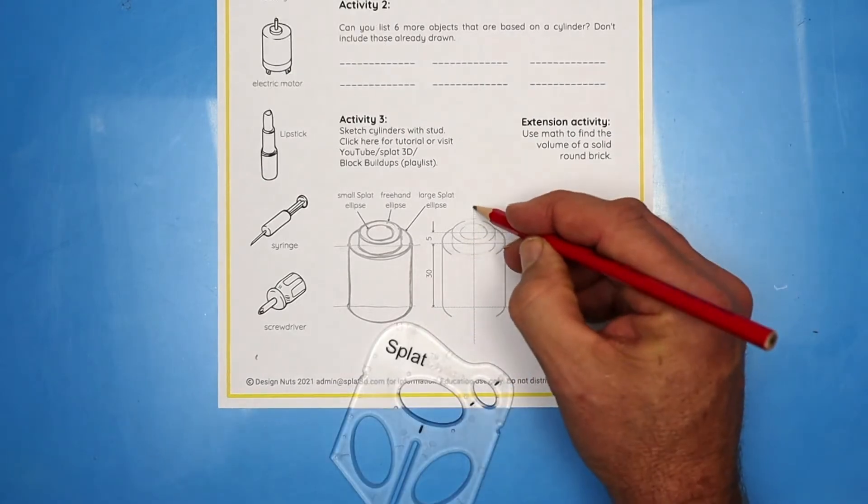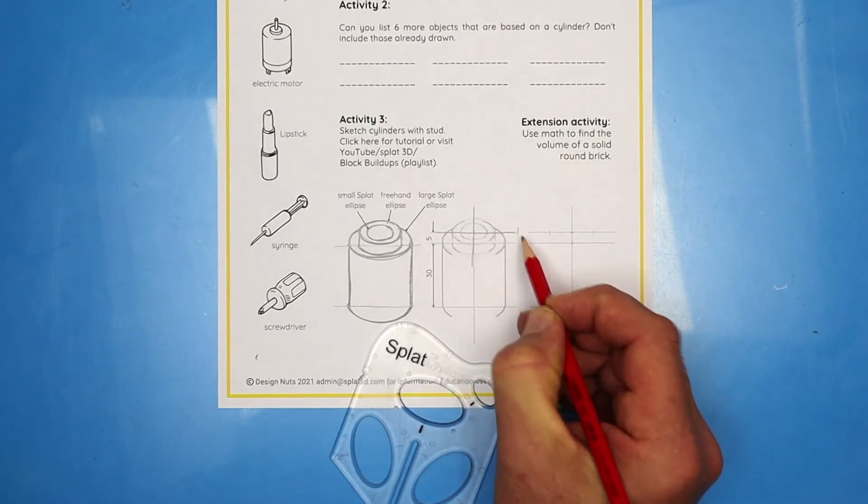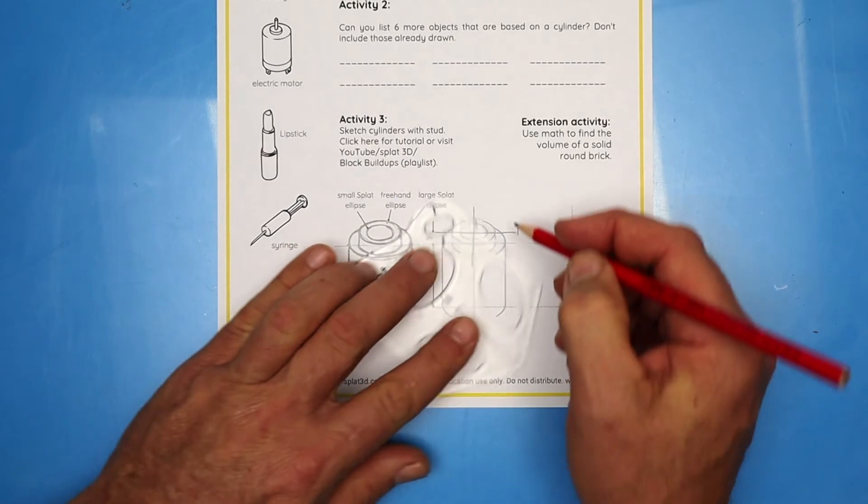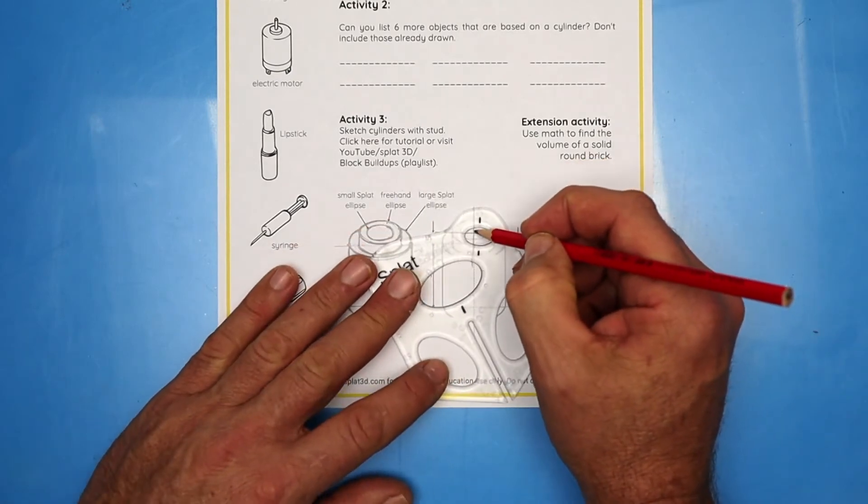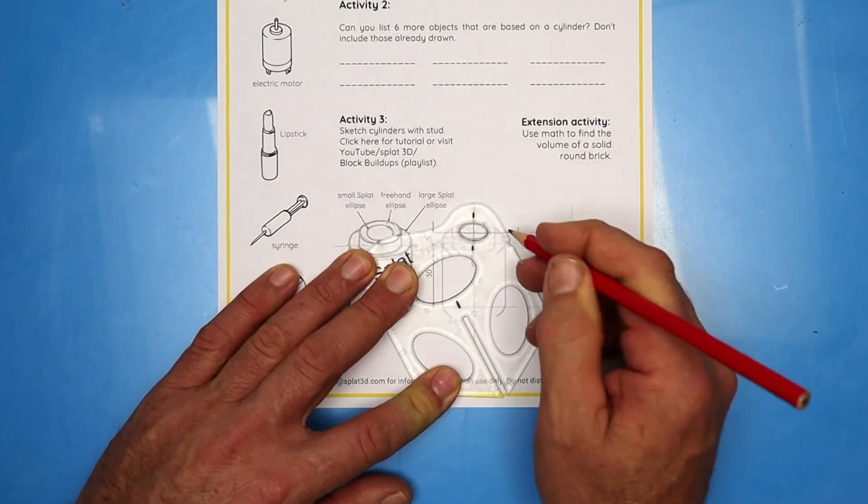Notice I'm drawing in the axis of symmetry. There's two in every ellipse. That's going to help me line up the Splat tool. So those two marks go on the axis and draw in the small ellipse.